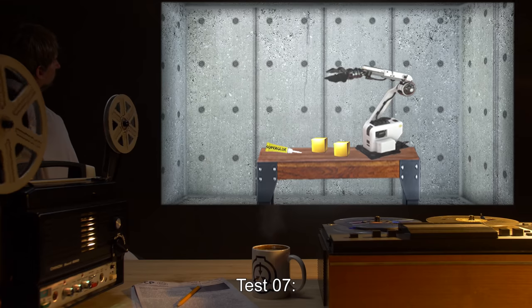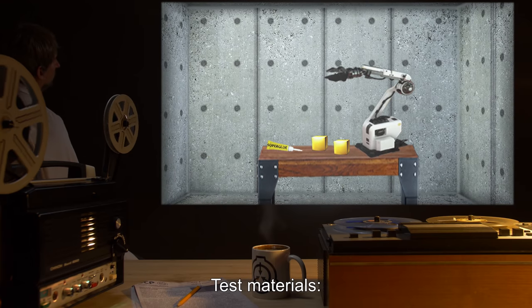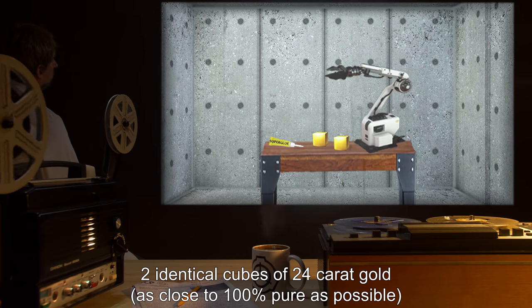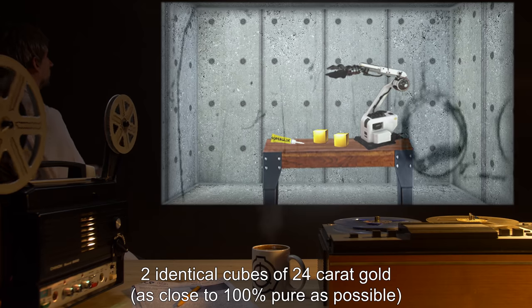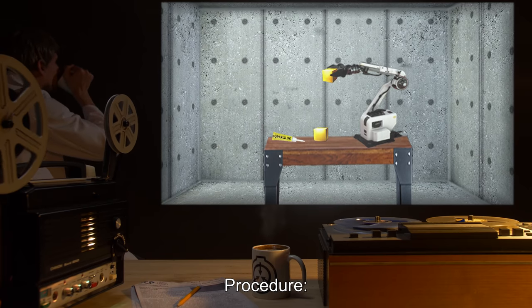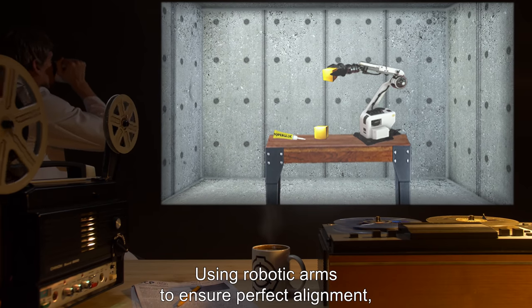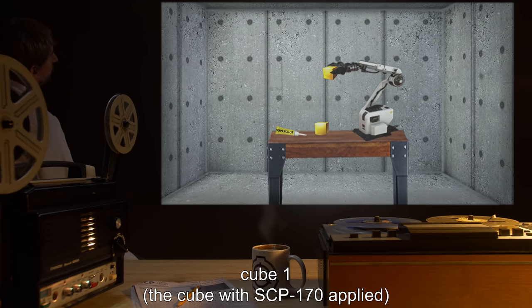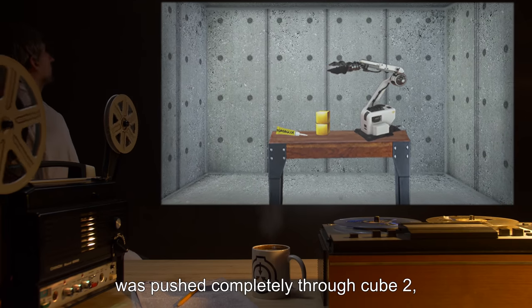Test 07. Test materials: two identical cubes of 24 karat gold, as close to 100% pure as possible. Procedure: using robotic arms to ensure perfect alignment, cube one (the cube with SCP-170 applied) was pushed completely through cube two, leaving what appeared to be one gold cube equal in size to either of the original cubes.